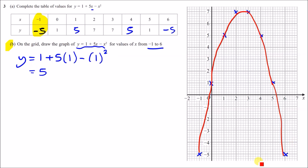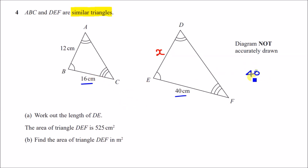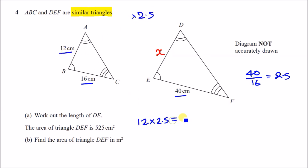Number four: ABC and DEF are similar triangles — same shape but proportionally bigger, scaled upwards. Part a: work out the length of DE, which we'll call x. Look at two corresponding lengths: 16 and 40. Divide 40 by 16 to get a scale factor of 2.5. Every length has been multiplied by 2.5, so x equals 12 times 2.5, giving DE equals 30 centimetres.